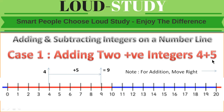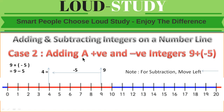Case 1: adding two positive integers. Suppose two positive integers are 4 and 5. On the number line, 4 is marked, and for addition we move right 5 digits: 4, 5, 6, 7, 8, 9 — a total of 5 steps. So our answer is 9. Adding two positive integers 4 and 5 gives 9.